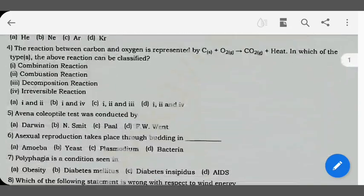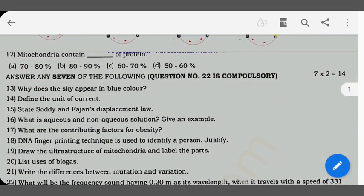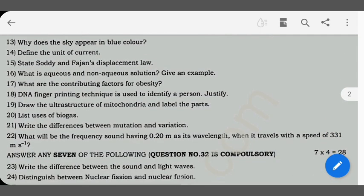This is my method, 12 one word questions. I got the Roman letter to answer any 7 of the following. Question number 22 is compulsory. This is the two mark questions. Question number 22: What will be the frequency sound having 0.20 meter as its wavelength when it travels with the speed of 331 ms to the -1.